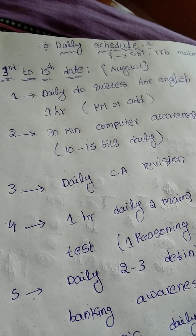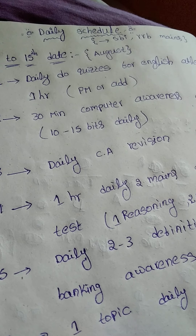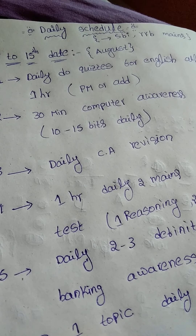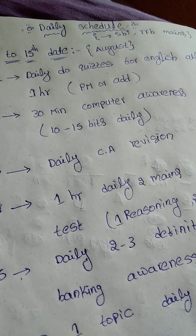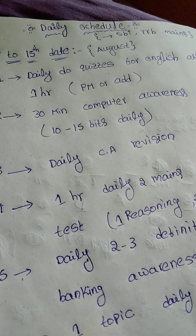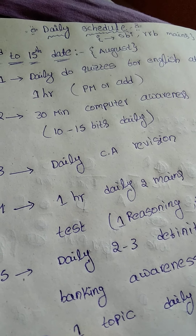The second step is 30 minutes of computer awareness daily. This means reading 10 to 15 bits daily, and the next day another 10 to 15 bits including revision of the previous day's bits as well. The third step is daily current affairs revision, which is common across all daily schedules.